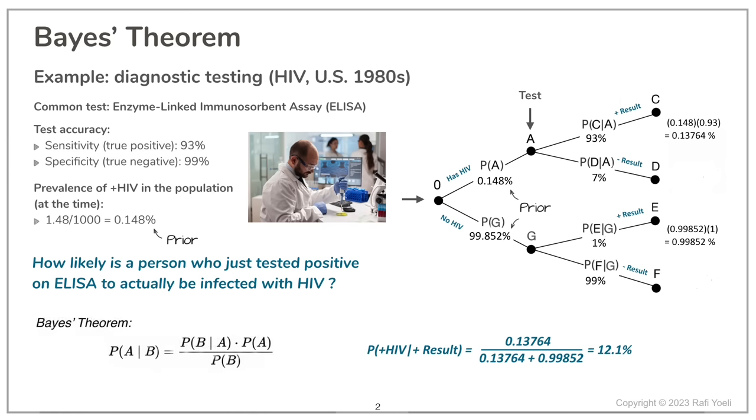And the surprising result is 12.1%. Much less than the 93% that people not familiar with Bayes' theorem would have answered. But note that 12.1% is certainly higher than the belief we had before the test was done. So for those who received a positive answer, it updated our prior belief that they had a probability of 0.148% to be sick; now we believe it is 12.1%.